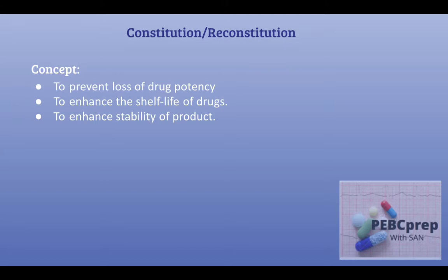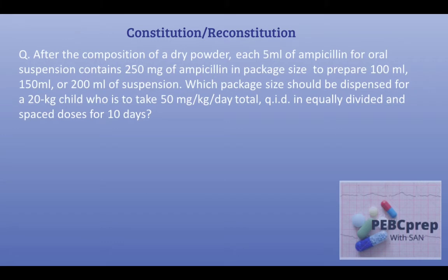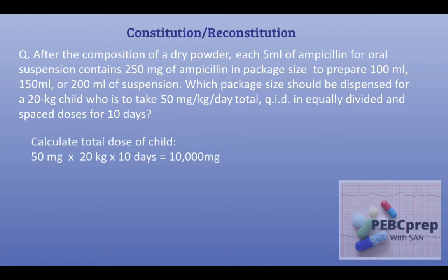Now we will move to the questions. Our first question: after constitution of a dry powder, each 5 ml of ampicillin for oral suspension contains 250 milligrams of ampicillin. The package sizes available are 100 ml, 150 ml, or 200 ml. Which package size should be dispensed for a 20 kg child who is to take 50 mg/kg/day, four times a day in equally divided doses for 10 days? First, we will calculate the total dose for the child.